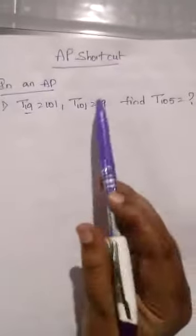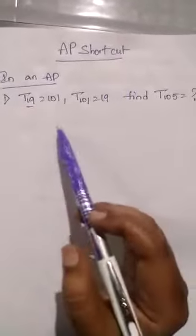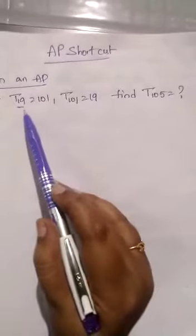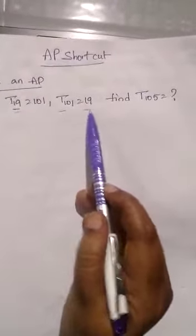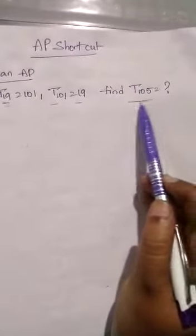Today we are going to learn AP shortcuts. So see this problem. T19 equals 101, T101 equals 19. So we have to find T105 value.